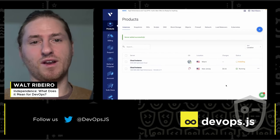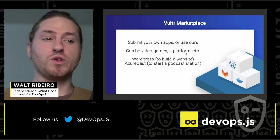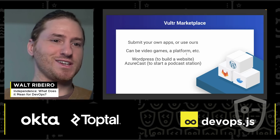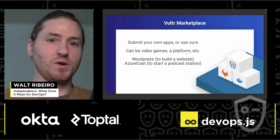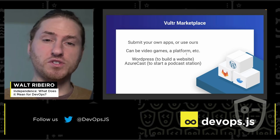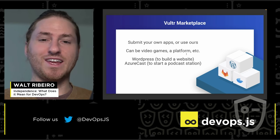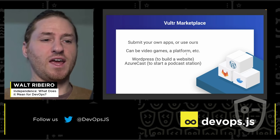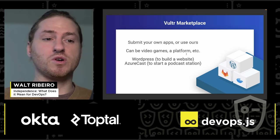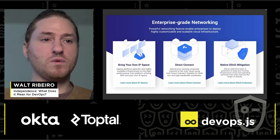You can submit your own apps to the Vulture Marketplace or use one of ours. This can be a video game, a platform, a service, or an app you're trying to deploy to developers all around the world. The advantage of uploading to Vulture is that you have access to all those developers as a one-click installation of your product or service. Some examples are WordPress for building a website, or Azuracast for starting a podcast radio station. We also have a lot in terms of enterprise-grade networking — you can bring your own IP space, use Direct Connect, and much more.